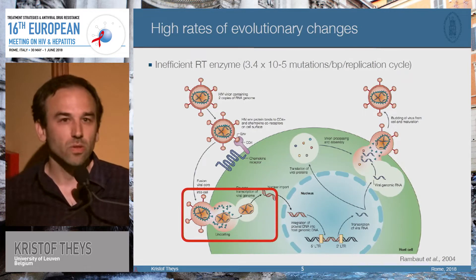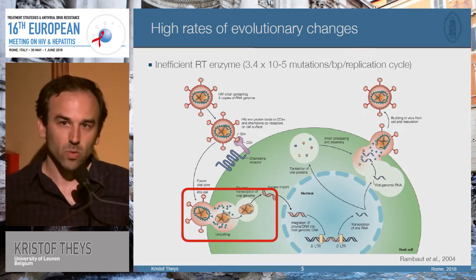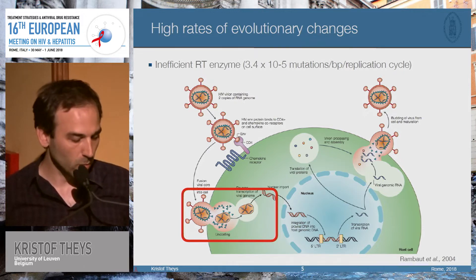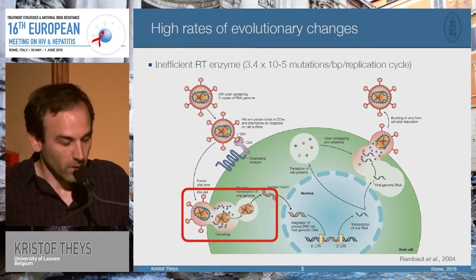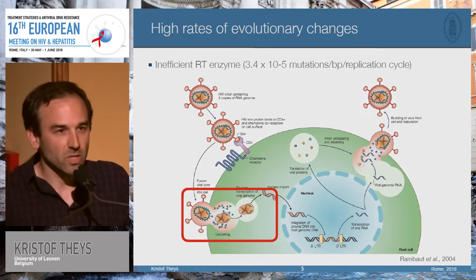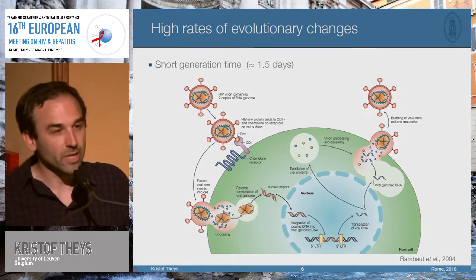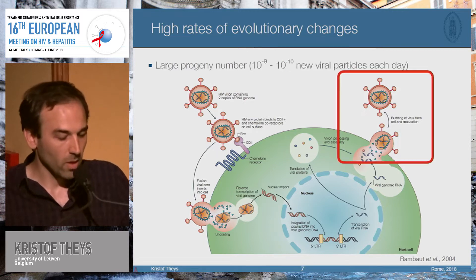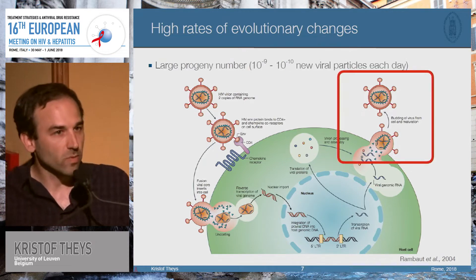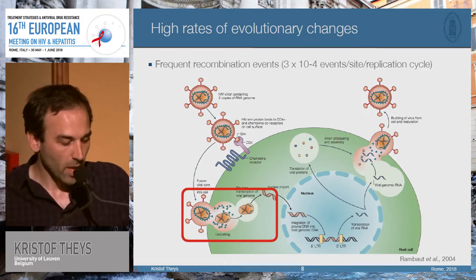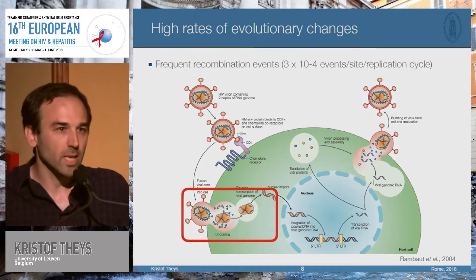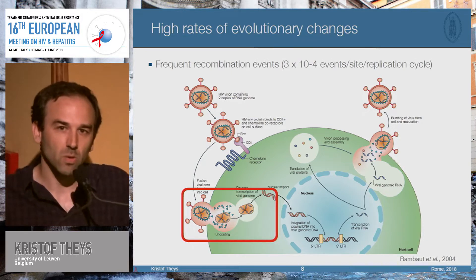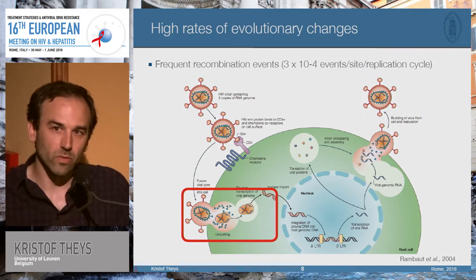The high evolutionary rates of HIV are partly due to the viral life cycle. We have a highly inefficient polymerase enzyme, a very short generation time from entry to maturation, a lot of particles released from a single cell, and template switching during the polymerase step. So we have a high frequency of recombination. All these factors allow the virus to generate a lot of diversity within the host.